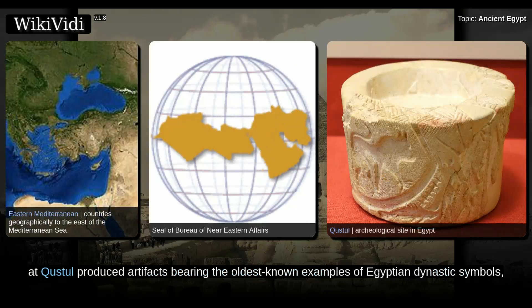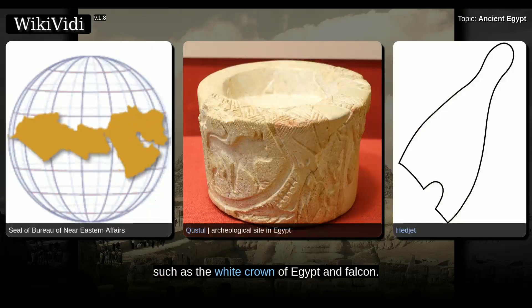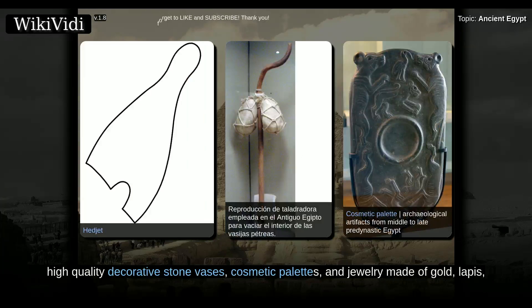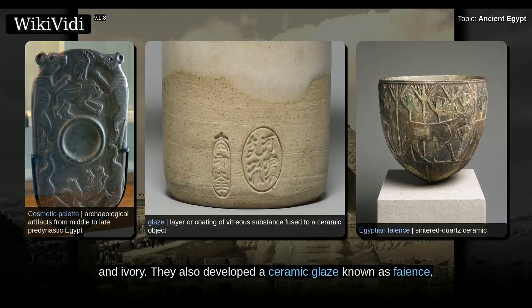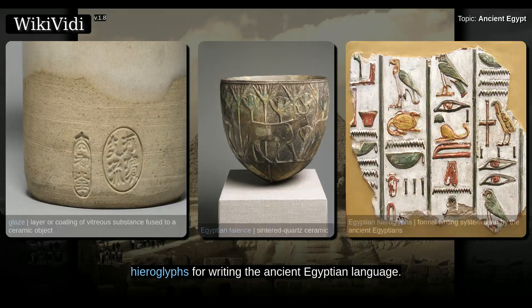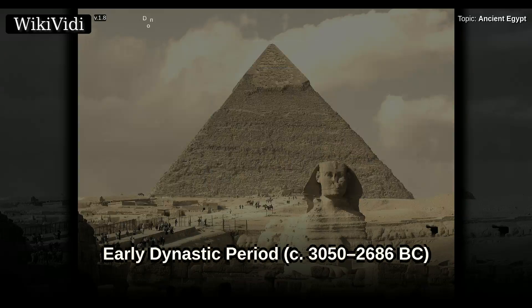Royal Nubian burials at Kustul produced artifacts bearing the oldest known examples of Egyptian dynastic symbols, such as the White Crown of Egypt and Falcon. The Nakada culture manufactured a diverse selection of material goods, reflective of the increasing power and wealth of the elite, as well as personal use items, which included combs, small statuary, painted pottery, high-quality decorative stone vases, cosmetic palettes, and jewelry made of gold, lapis, and ivory. They also developed a ceramic glaze known as faience, which was used well into the Roman period to decorate cups, amulets, and figurines. During the last pre-dynastic phase, the Nakada culture began using written symbols that eventually were developed into a full system of hieroglyphs for writing the ancient Egyptian language.